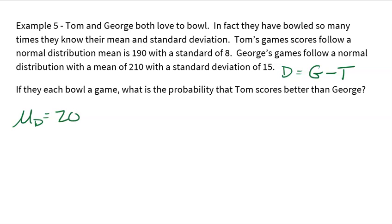How'd I get that? Well, George typically bowls at 210. Tom typically bowls at 190. That's a difference of 20. So on average, I would expect George to be 20 more pins than Tom. But think about it. George could deviate on the low end. Tom could deviate on the high end. And all of a sudden, maybe Tom does score better. So it is possible. And the question is, what's the probability of that happening?